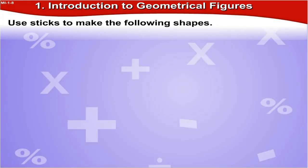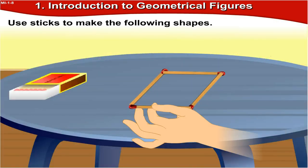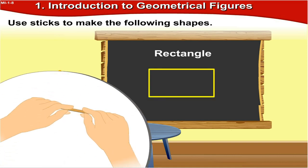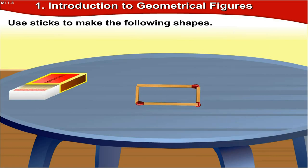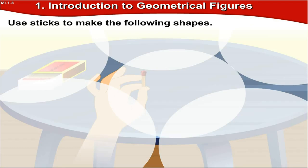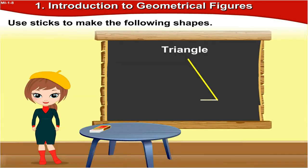Use sticks to make the following shapes. A quadrilateral can be made with the help of sticks in this manner. Rectangle — you have learned that opposite sides of a rectangle are equal, so you will need two sticks of the same size and another set of two sticks of the same size. Square — in a square all four sides are equal, so you will require four sticks of the same size. Triangle — with the help of three sticks you can make a triangle.